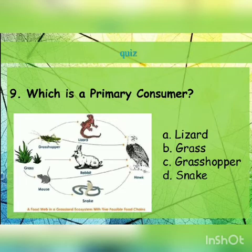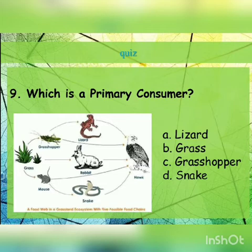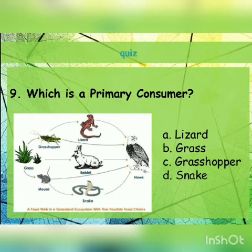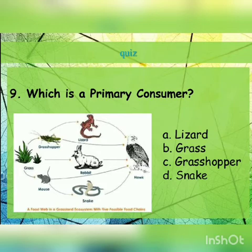Next question: in the food web given below, which is a primary consumer? A primary consumer is an organism which consumes plants. The options are lizard, grass, grasshopper, and snake. Looking at the food web, the organism consuming grass is the grasshopper. So grasshopper is the primary consumer. The answer could also be rabbit or mouse, but those are not given in the options.